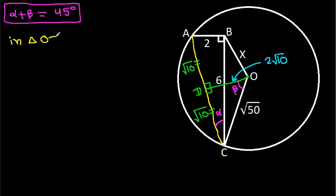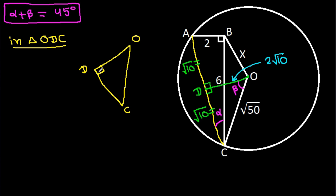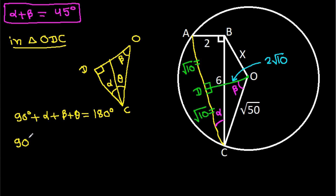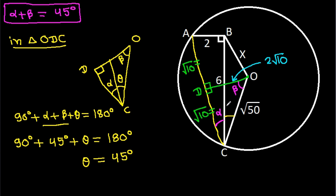We have alpha plus beta is 45 degrees. In triangle ODC, angle ODC is 90 degrees, angle beta, and angle alpha. Suppose this angle is theta. Then 90 degrees plus alpha plus beta plus theta equals 180 degrees, giving 90 plus 45 plus theta equals 180, so theta equals 45 degrees. We get angle BCO is 45 degrees.